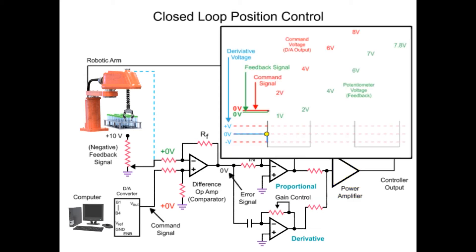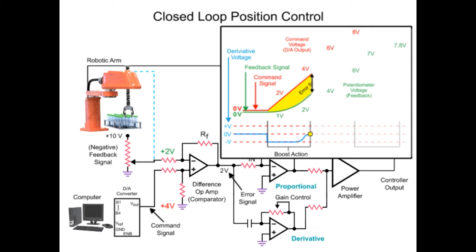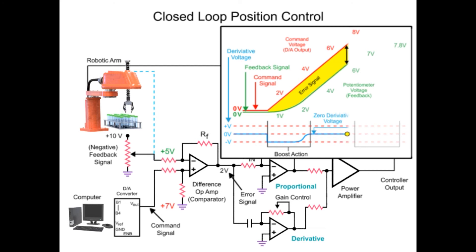The error becomes constant when the potentiometer voltage indicates that the robotic arm position is changing at a constant rate of the command signal. At this time, the derivative voltage changes to zero volts and the proportional amplifier continues to produce a voltage. As the command signal stops changing, the robotic arm continues to move with a decreasing error signal. As the error is reduced, the derivative amplifier output voltage changes polarity and cancels the proportional voltage.